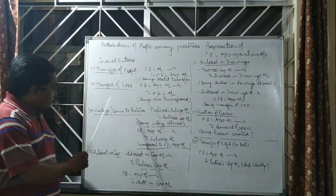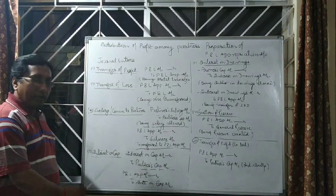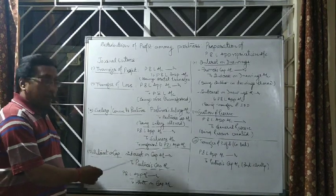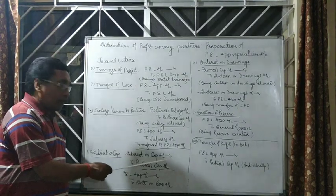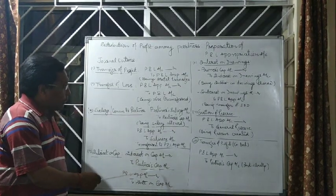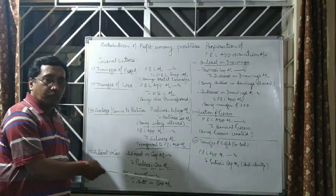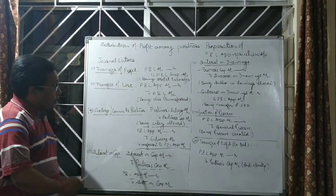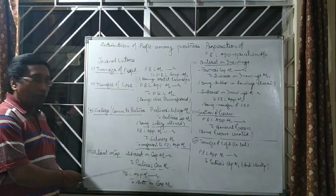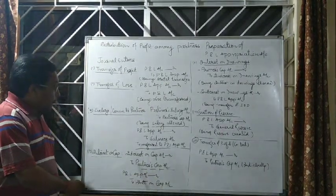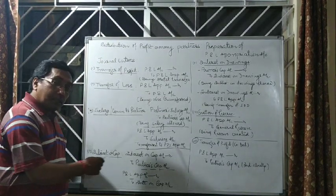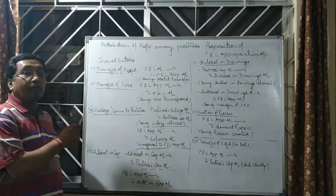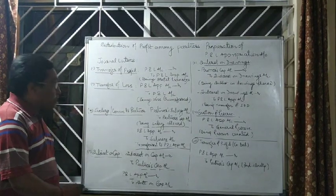Similarly, the same treatment applies. Because salary, commission, and interest on capital have the same nature — all are expenses for the firm — a similar entry is passed. Interest on capital account debit to partners' capital account (or partners' current account, depending on the situation). Interest on capital is a nominal account, so it should also be closed through profit and loss appropriation account. Appropriations are closed through profit and loss appropriation account, and charges are closed through profit and loss account.